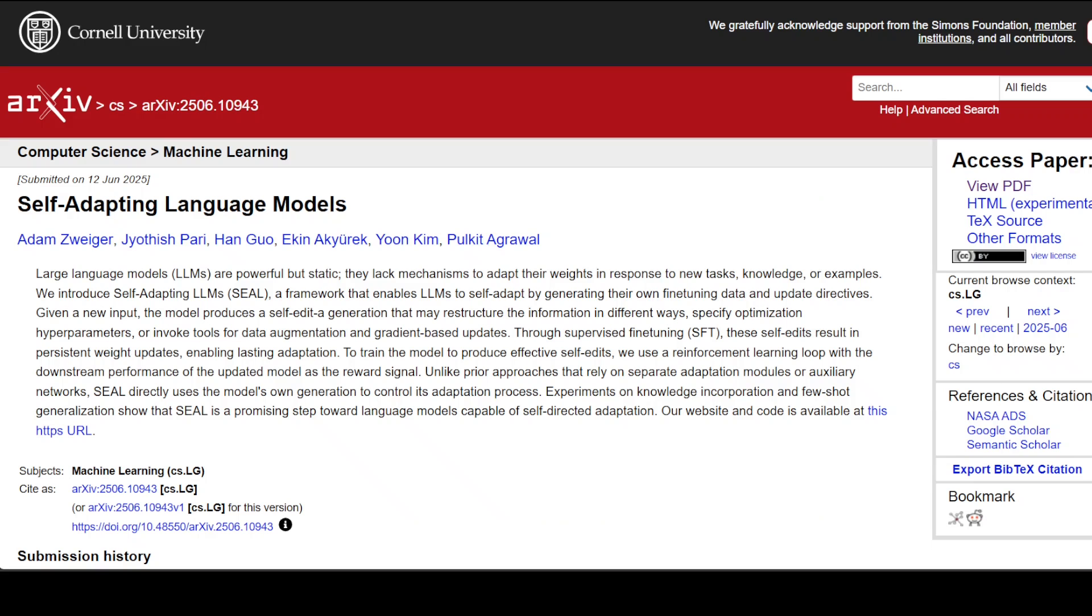Now there are a lot of other implications too. Despite these limitations, SEAL represents an exciting step towards truly adaptive AI systems. The idea of models that can autonomously decide how to learn from new information could be crucial as we move towards more capable and autonomous AI agents.